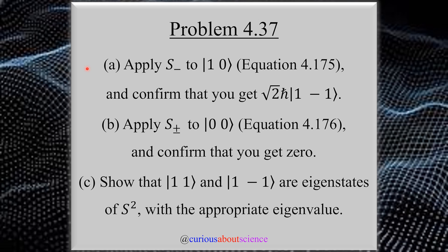In part A, we want to apply the lowering operator to the state |1,0⟩, defined by equation 4.175, and confirm that we get √2 ℏ with the next lowest state. In part B, we want to apply the raising and lowering to the state |0,0⟩, defined by this equation, and confirm we get 0.